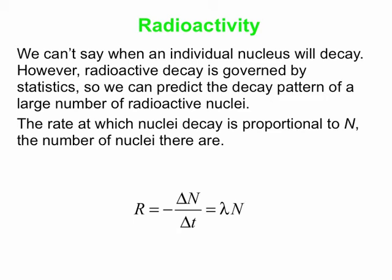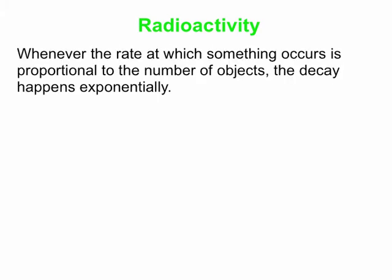We're reusing lots of symbols here. N is the number of nuclei, radioactive nuclei. Lambda is not a wavelength, it's a decay constant. And this thing, delta N over delta T, we call the activity. So it's basically number of decays that happen per unit time, per second, per minute, per hour, per whatever. Lambda again is the decay constant. And as I mentioned before, whenever the rate at which something occurs is proportional to the number of objects you have, then you get an exponential. And in this case, it's a negative exponential because we're losing things.